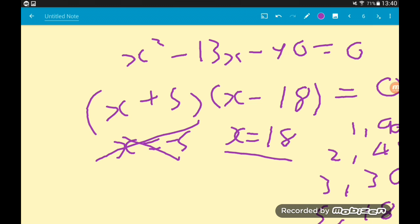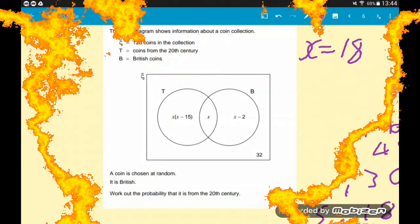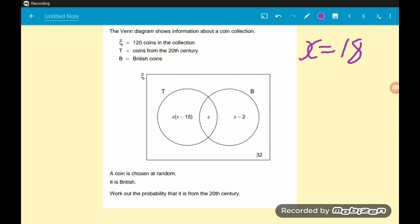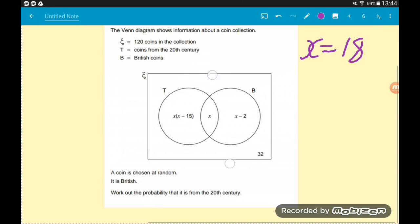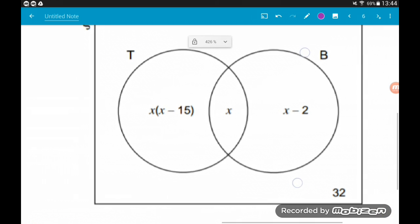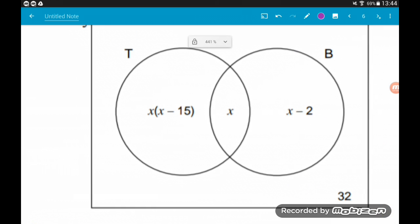Now that we've got that, I'm going to clear things up, go back to the Venn diagram and finally answer the question. We've done all that, we've worked out that x is 18. So we can now work out how many coins are in each set. First, we've got x in the middle, x is 18, so we've got 18 coins in that.